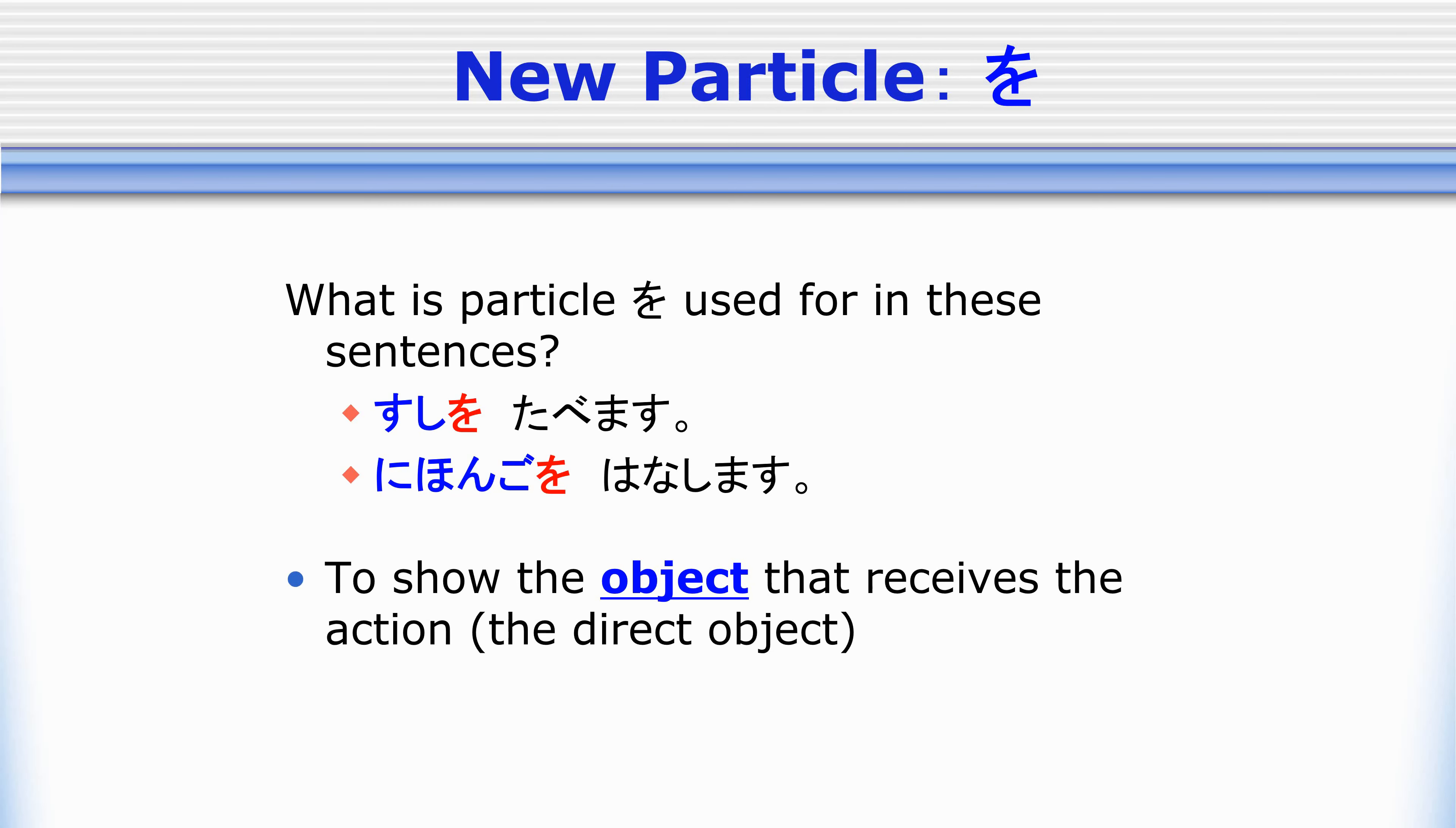We use O to mark the object that receives the action, the direct object. If you're not familiar with this term, we could think of it as, for example, when we eat, what are we eating? When we have a sentence in Japanese, we want to have our verb here at the end, and then before it, we can have our particle with O to tell us what we are eating, what we are speaking.